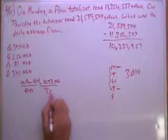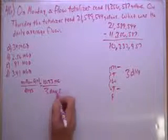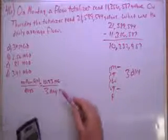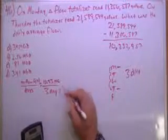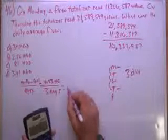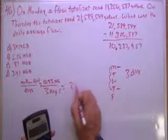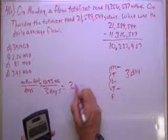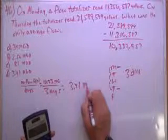So that's what we got. Three days. So million gallons per day is going to be 10.23 divided by three days. And that's going to give you 3.41 mgd.